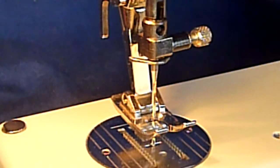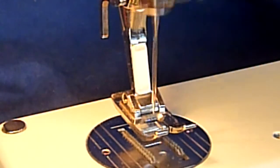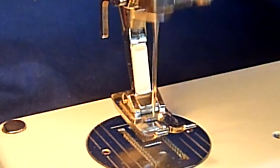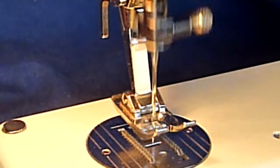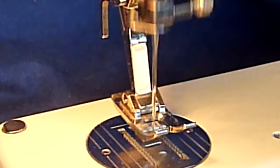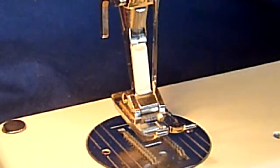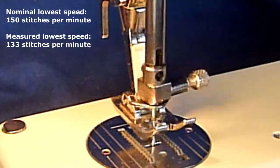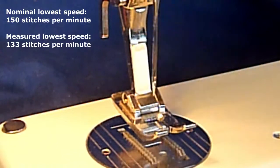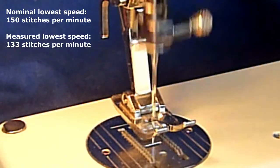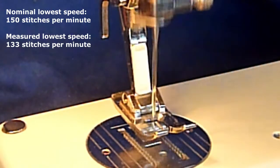This shows the lowest speed of the machine when it is unmodified as from factory. So you see this is the speed of it and the factory setting is 150 stitches a minute, two and a half stitches a second. That is the lowest speed and I think it is too high for me. So that is why I try to modify the machine.